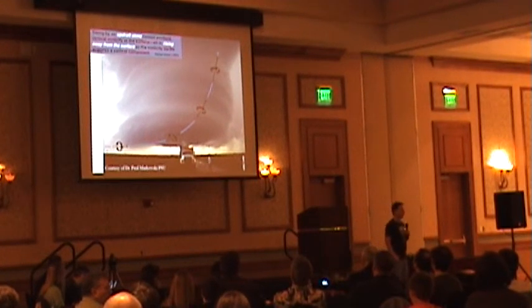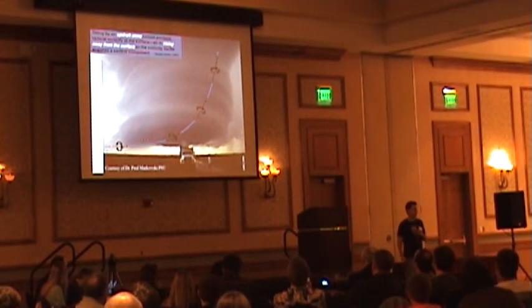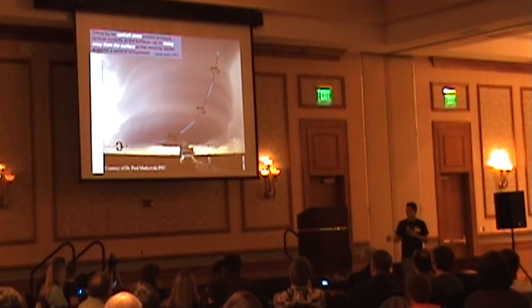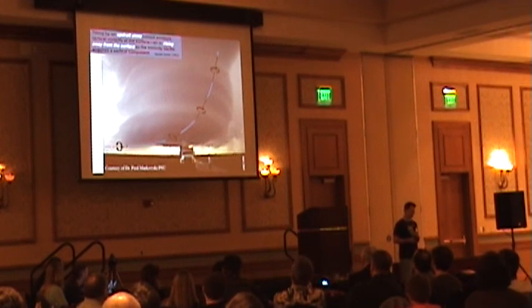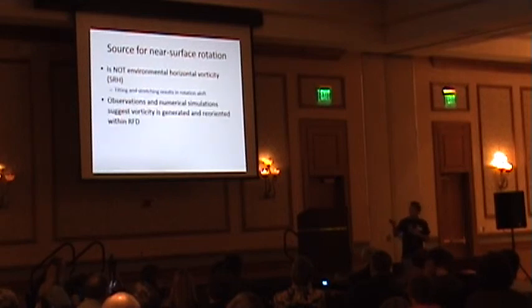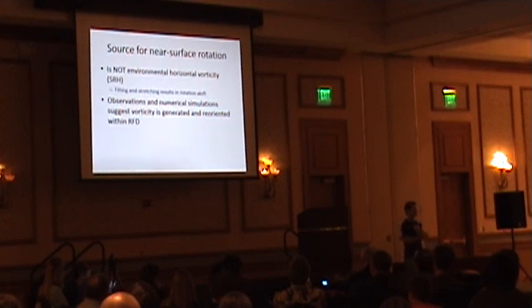This is the illustration of streamwise vorticity, going back to Davies-Jones. Theoretically, you can't have surface rotation due to storm-relative helicity alone. Because if you tilt and stretch it, the rotation has to be above the surface. So storm-relative helicity by itself does not give you surface rotation - it gives you rotation just above the surface. It's still very important and related to the tornado genesis problem, but not directly. The observations and simulations suggest that the vorticity for near-surface rotation comes from the rear flank downdraft. This is the hook echo region - the RFD part of the storm. We have temperature gradients generating vorticity. The question is how do we get that vorticity oriented in the vertical rather than horizontal.